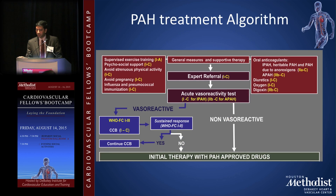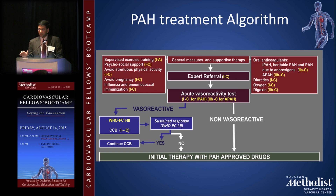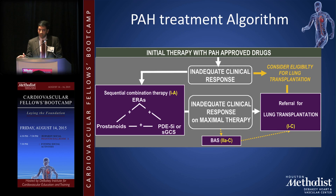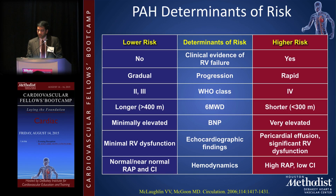If you suspect PAH, perform vasoreactivity testing in the cath lab using nitric oxide, prostacyclin, or adenosine. If the patient is vasoreactive, they may respond to calcium channel blockers. If not vasoreactive, refer to a dedicated PH center to assess functional class and treat appropriately. If there is inadequate response to medications, lung transplantation is considered.